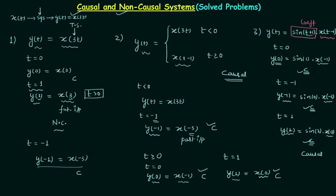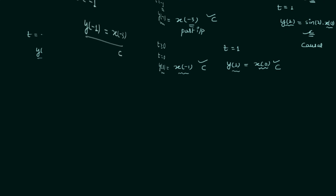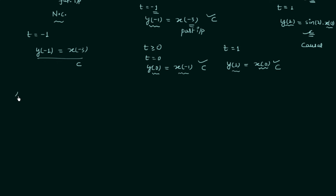After this I will give you homework problems — there are three in this lecture. In the fourth problem, the output y(t) is equal to x(e^t). This time e^t is not a coefficient; it is the variable for the input.